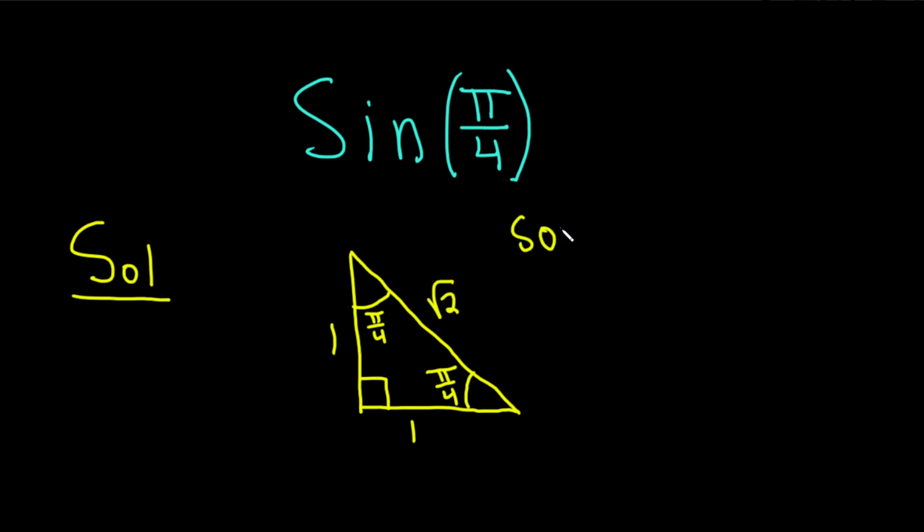And then we use SOH-CAH-TOA. This means that sine is opposite over hypotenuse, cosine is adjacent over hypotenuse, and tangent is opposite over adjacent.